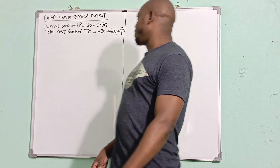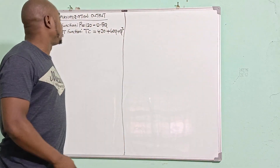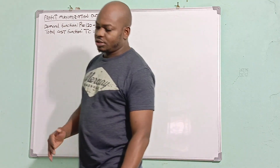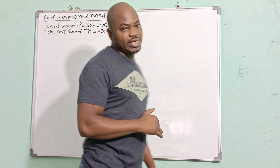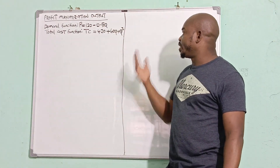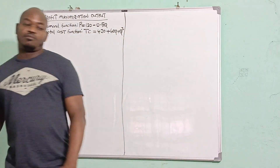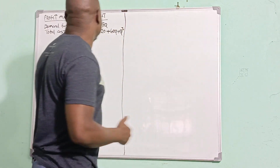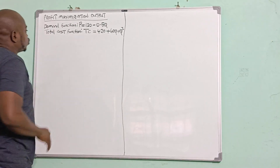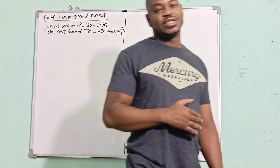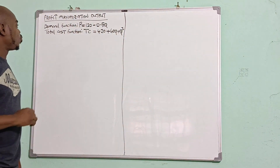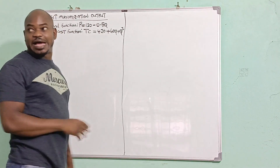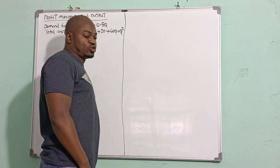Welcome to this tutorial. In this video I'll be demonstrating how to calculate the profit maximization output for a firm operating in an imperfect market. Firms like a monopoly operate in an imperfect market. I'm going to demonstrate how to calculate the profit maximization output when given the demand curve and the total cost function. I have two functions: the demand function P = 120 - 0.5Q, and the total cost function TC = 420 + Q + Q².